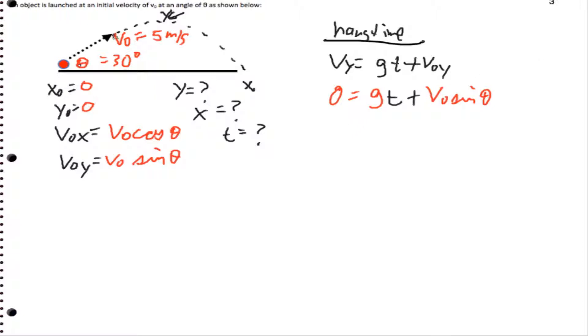So what I end up getting is that t equals, and I'm going to write everything, I'm using absolute value, so it's v0 sine theta divided by g here. So I guess I could put negative g since it's a negative number, but the point is this is what t equals.